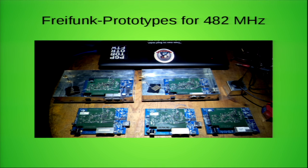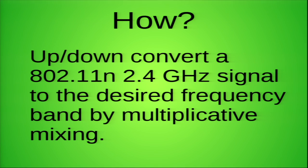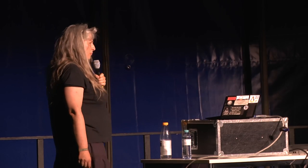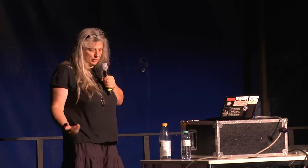There is not much on the market and it's very pricey, so since I like to eat my own dog food I decided to build prototypes for that band. You can see the very first batch in this picture. I did it by frequency converting — something that many hams use. For example, when the 13 centimeter band was introduced into ham radio, people used transverters to use their existing gear from the 70 centimeter band to shift it to the 13 centimeter band. I'm doing the same thing using multiplicative mixing.